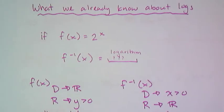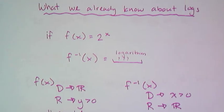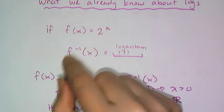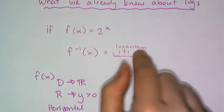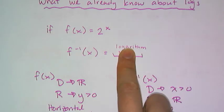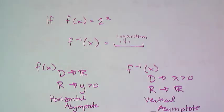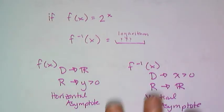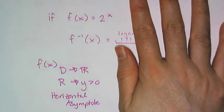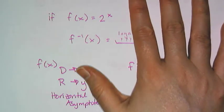Let's look at some example of some random exponential function. Let's look at f(x) equals 2^x. So the inverse involves a logarithm, and we'll talk about the notation in a second. Looking at the exponential function, we know it has a domain of all reals and a range that's y is greater than zero, and it has a horizontal asymptote.